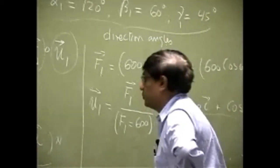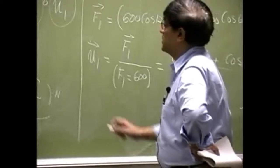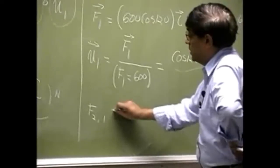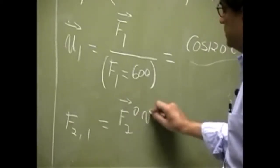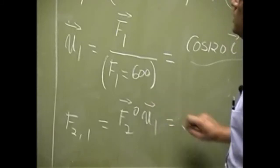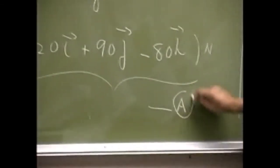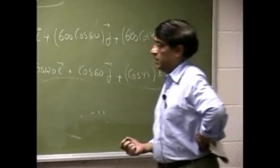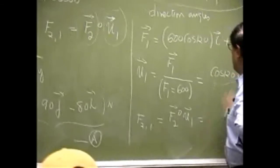So we go back to the very first equation. That means F2's component along direction 1, that's F2 dot U1. We have the force here, that's equation A. We have the unit vector, that's equation B. So now we want to do the dot product of this with this.